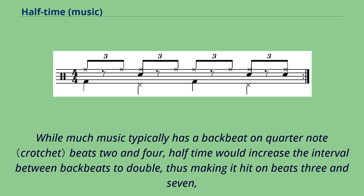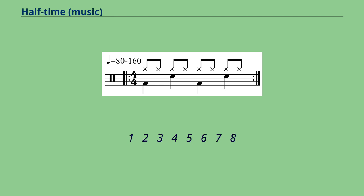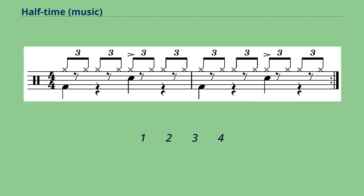While much music typically has a backbeat on quarter note beats 2 and 4, halftime would increase the interval between backbeats to double, thus making it hit on beats 3 and 7 — or the third beat of each measure: 1-2-3-4-1-2-3-4 / 1-2-3-4-5-6-7-8 / 1-2-3-4.